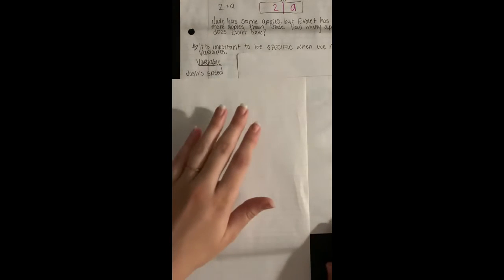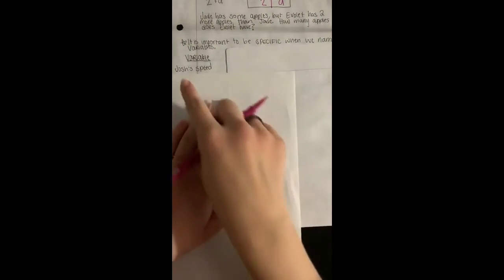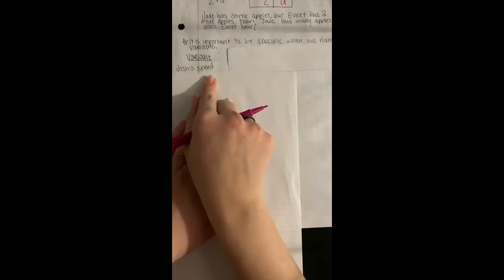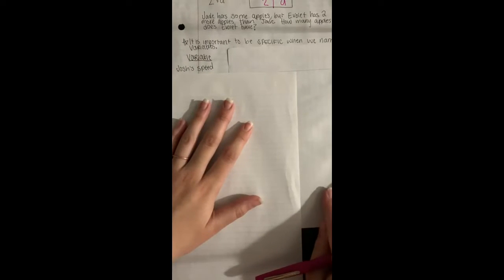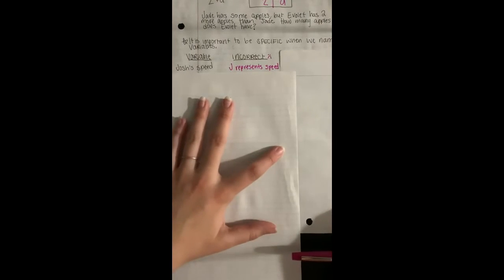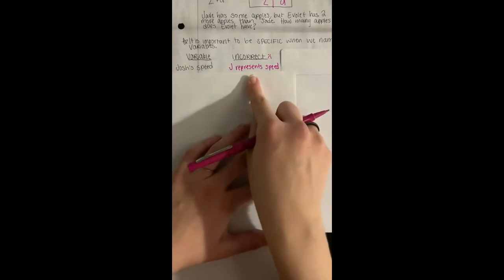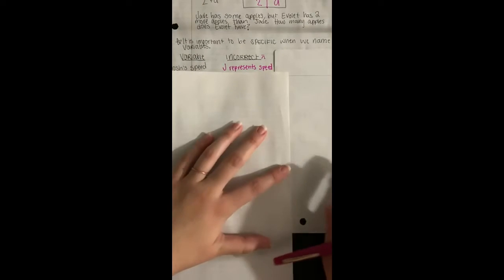And we're gonna talk about the correct and incorrect way to write or describe those variables. So let's pretend like we have a problem where we have to find Josh's speed, but they don't tell us exactly what his speed is, so we just have to pick a letter to represent that. So they're saying the incorrect way would just to be saying, oh, I'm gonna pick J and J represents the speed. They're saying that is not specific enough.